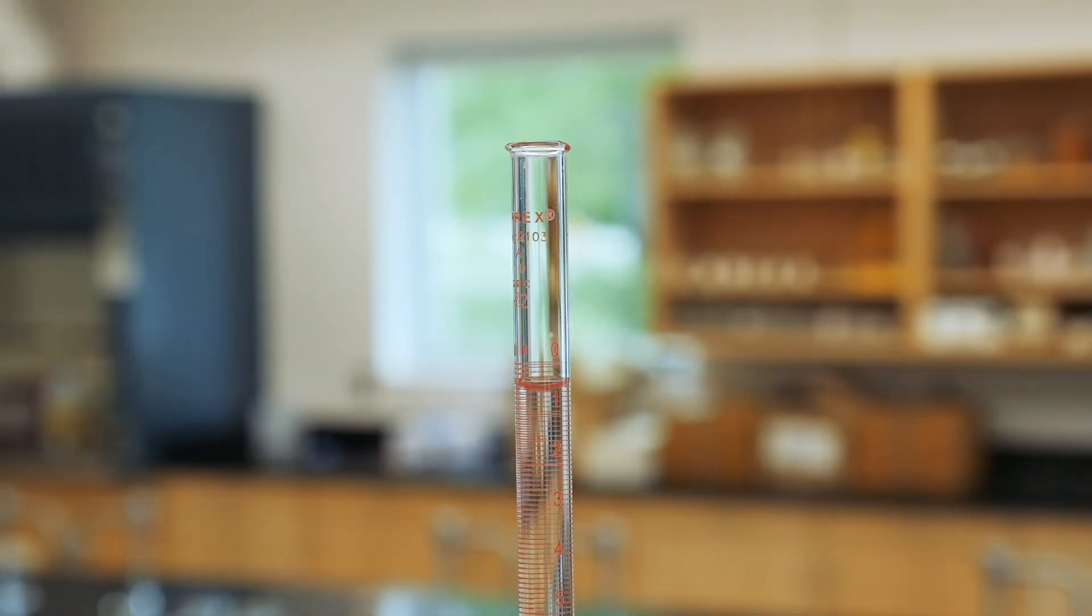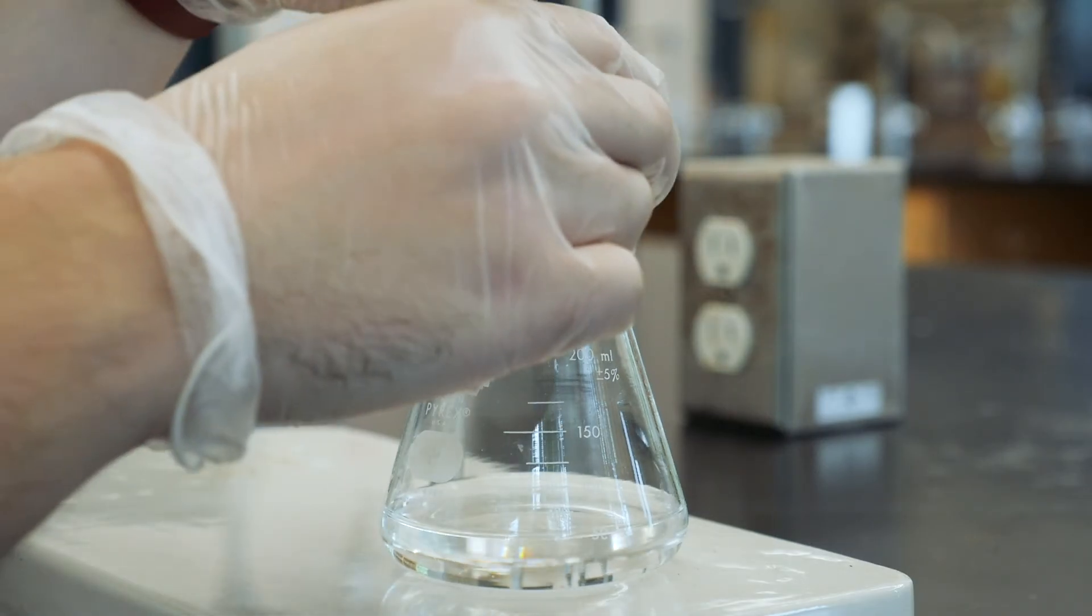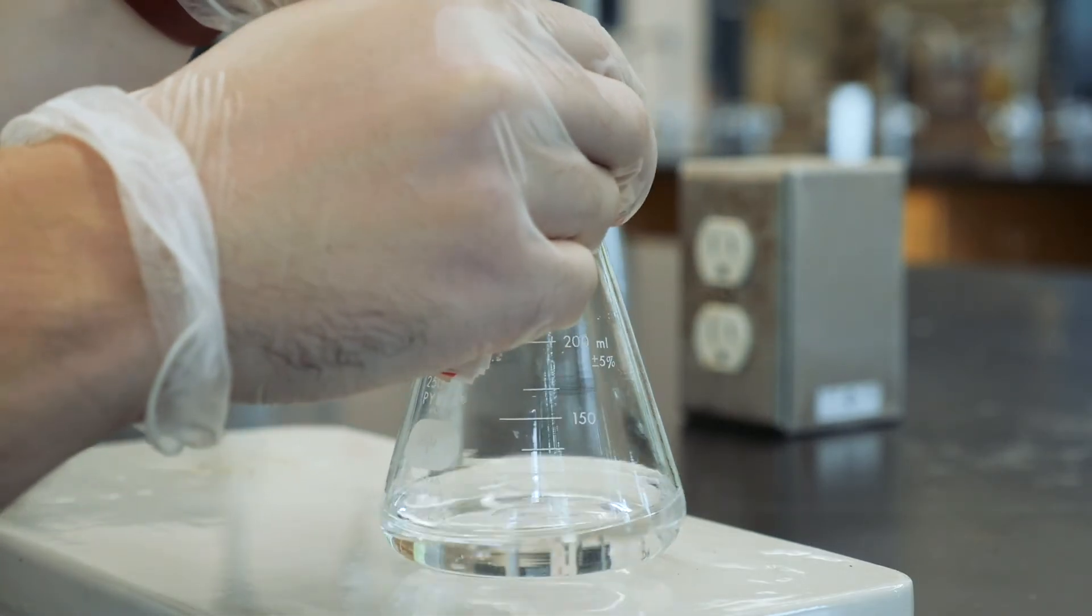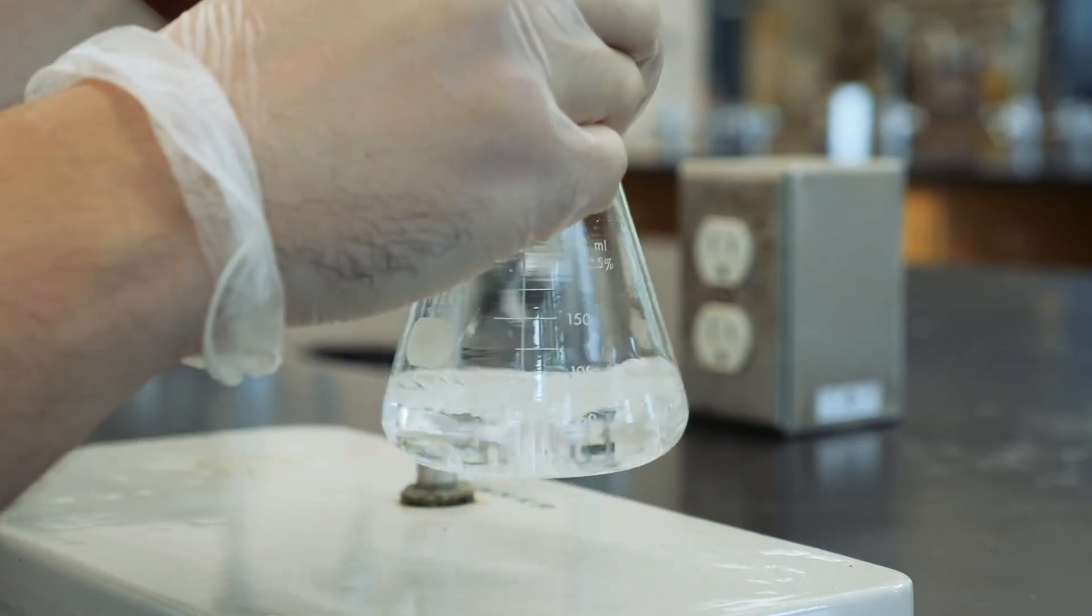Titrate the KHP acid with your sodium hydroxide solution. The endpoint of the titration will be given by the first permanent pink color maintained in the solution.